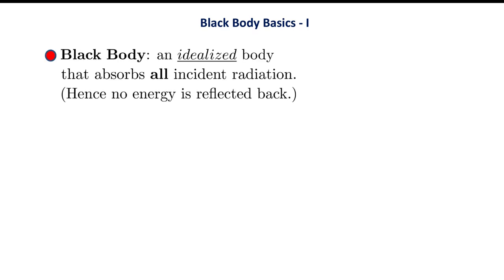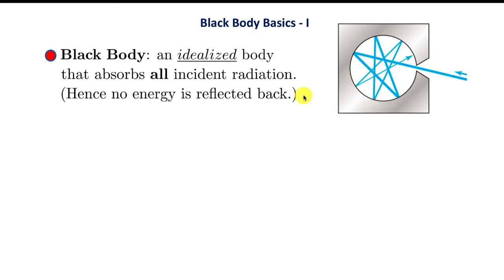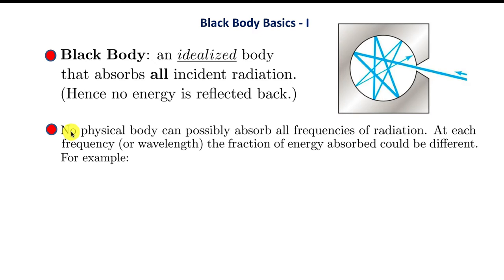We all know that black absorbs well and white reflects. Drawing upon this daily experience, we define the ideal blackbody as a body that absorbs all incident radiation — no energy is reflected back. A simple model for a blackbody is a cavity where a ray of light comes in, bounces inside, and each time it bounces it gets a little weaker because it's absorbed, until eventually none of it can escape.